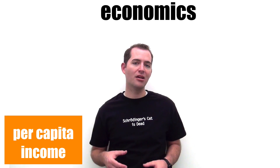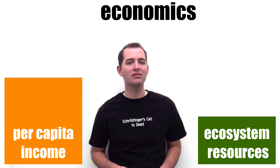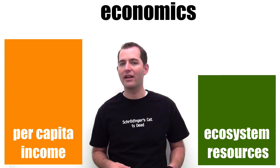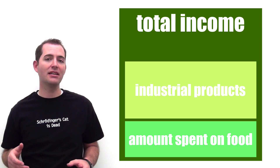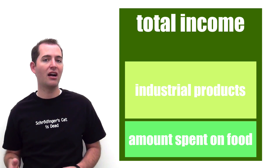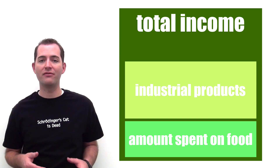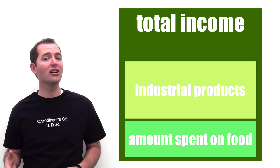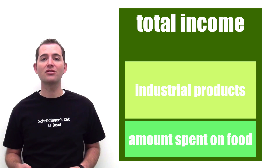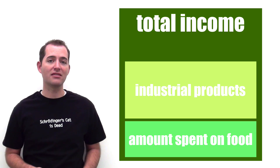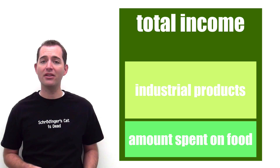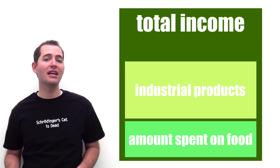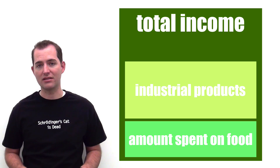As per capita income grows, the demand for ecosystem resources also increases. As countries and individuals become more affluent, they typically spend a smaller share of their economic resources on food and a larger share on industrial services and products. These behaviors can lead to changes in habitat use and in the exploitation of ecosystem resources.